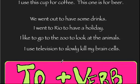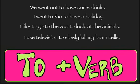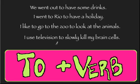The second rule: we use 'to' with a verb. For example: we went out to have some drinks — 'have' is the verb. I went to Rio to have a holiday, or I went to Rio to drink caipirinhas. I like to go to the zoo to look at the animals. And I use television to slowly kill my brain cells — 'kill' being the verb.